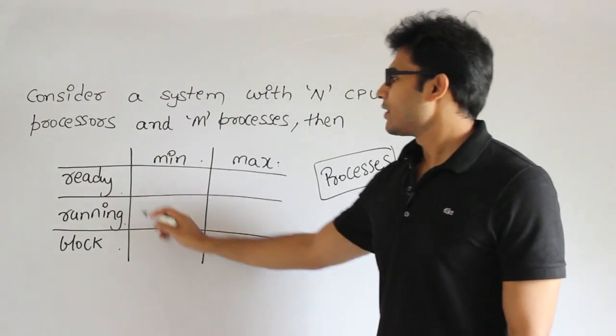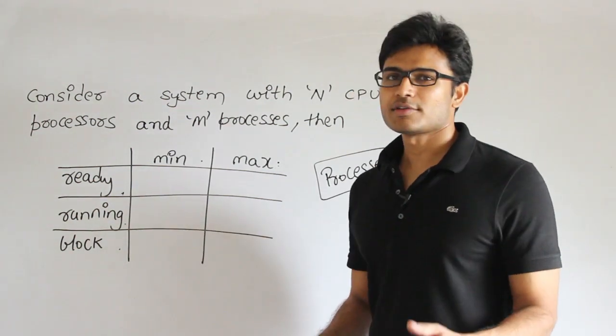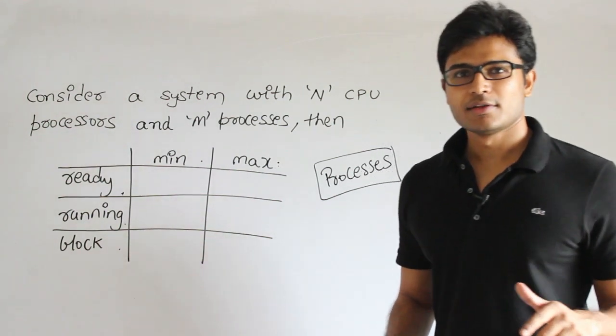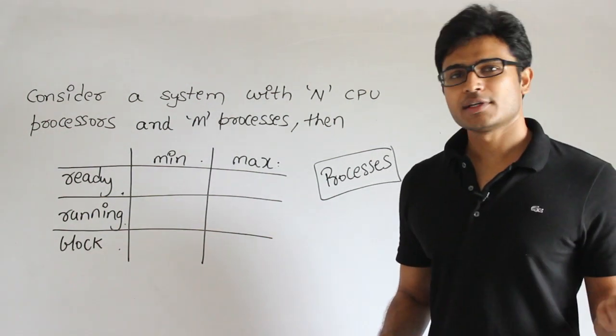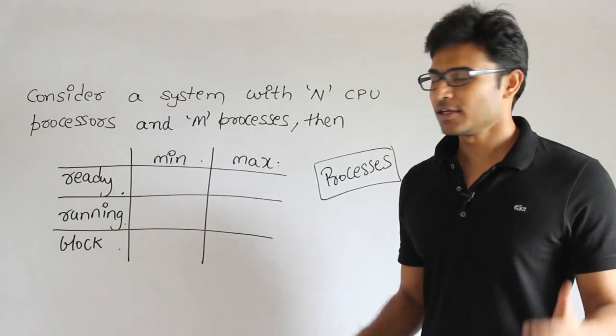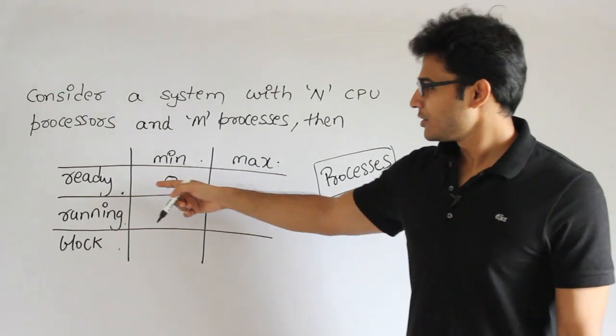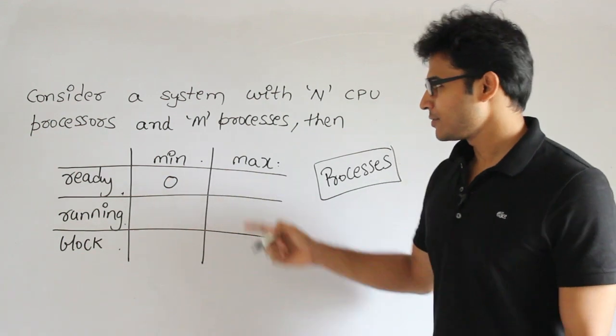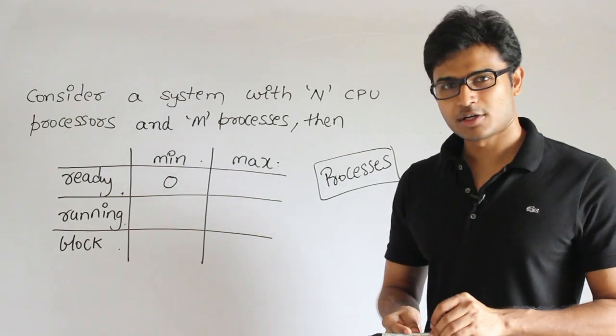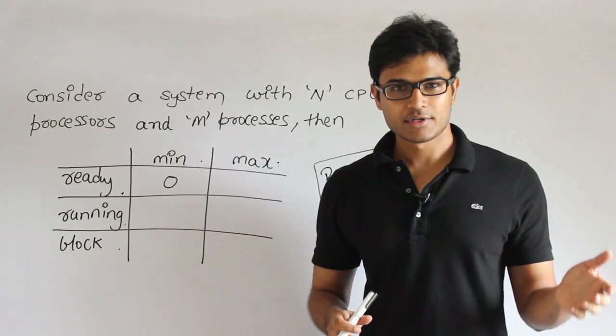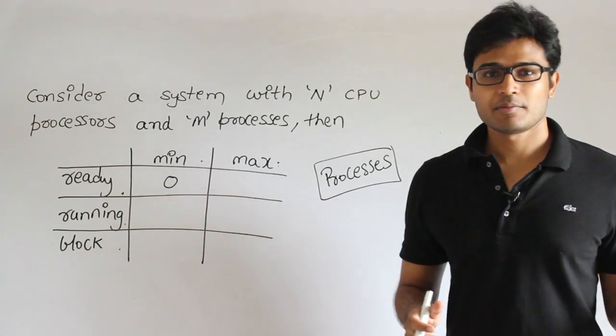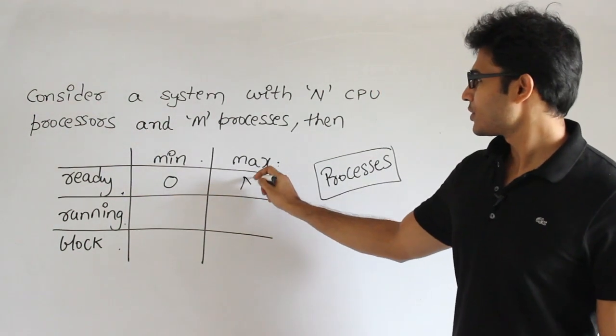For ready state: the minimum number of processes can be zero because there could be no processes at all. The maximum depends on the long-term scheduler, but the maximum possible is m because we have a total of m processes.